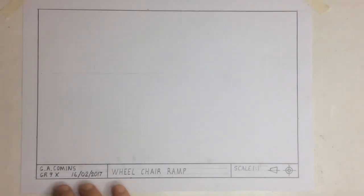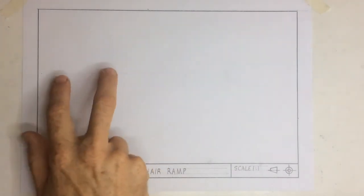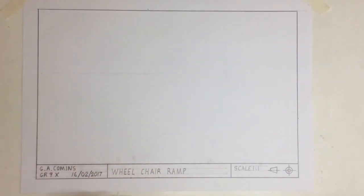Okay, we're going to draw a wheelchair ramp in first angle orthographic projection at a scale of 1 to 1. I've given you a specification that the length of the wheelchair ramp must be 150 millimeters long.